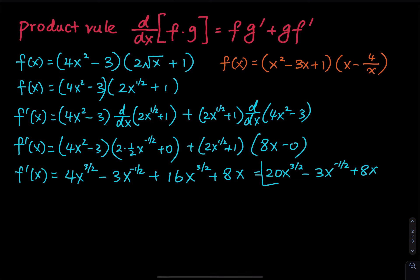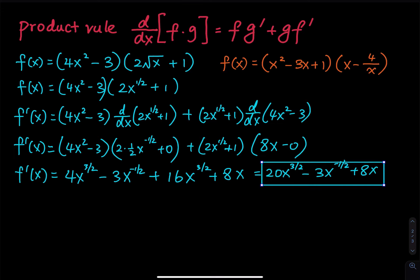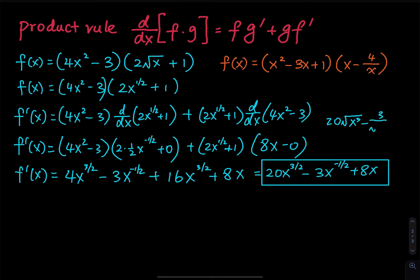This is your final answer. One more thing: if your instructor does not accept rational exponents and negative exponents, then you have to write 20 times the square root of x cubed, minus 3 divided by the square root of x, plus 8x. But I do accept rational and negative exponents. That's the first problem — let's move on to the next function.